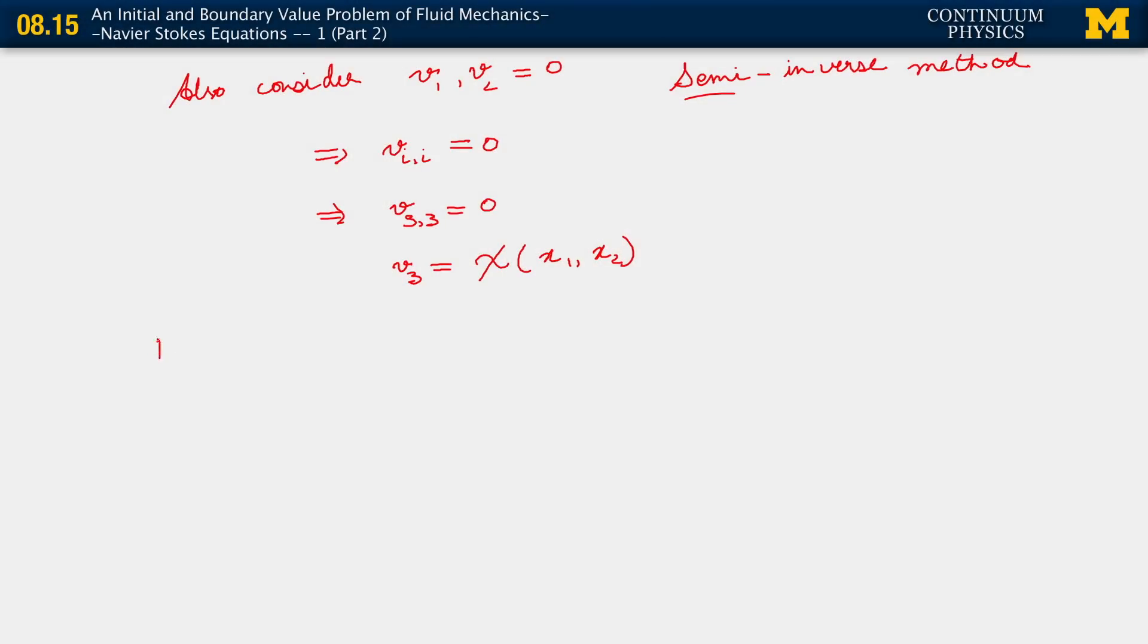Momentum balance. Let's rewrite it. It's rho partial of v with respect to time. We already know that first term is going to drop out because we have the fundamental assumption of steady flow.